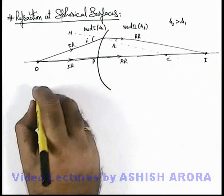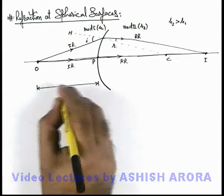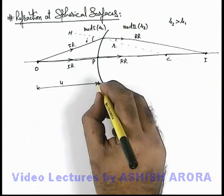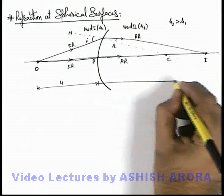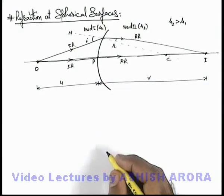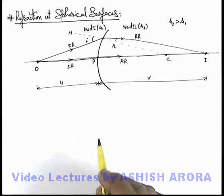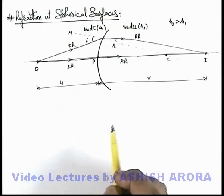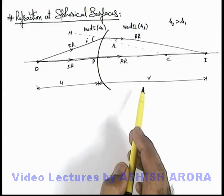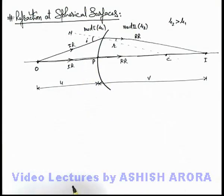In this situation, if the object is located at a distance u from the pole of this boundary, and the image is produced at a distance v from the pole of this boundary, then u and v can be related by some mathematical rule, by which we can analyze image formation due to refraction at spherical surfaces.